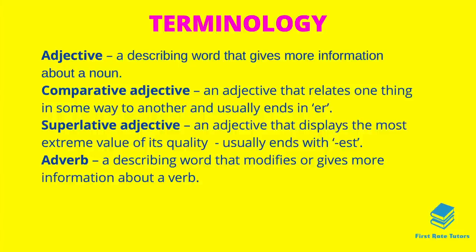An adjective is a describing word that gives us more information relating to a noun, such as a red table. You will also come across comparative adjectives and superlative adjectives. A comparative adjective relates one thing to another and usually ends in '-er', for example 'this table is bigger'. A superlative adjective displays the most extreme value and usually ends in '-est', for instance 'this table is the biggest of all tables' or 'this is my best friend', meaning this friend is your closest out of all others.